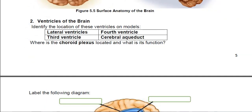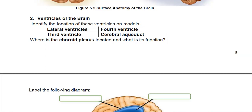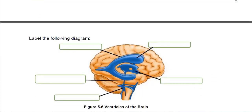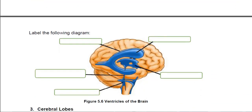Between the cerebrum and the cerebellum we have the transverse fissure. Next, we talk about the ventricles — open spaces in the brain where cerebrospinal fluid is made and circulates. Wherever you see blue in this diagram, that is open space buried inside the brain.